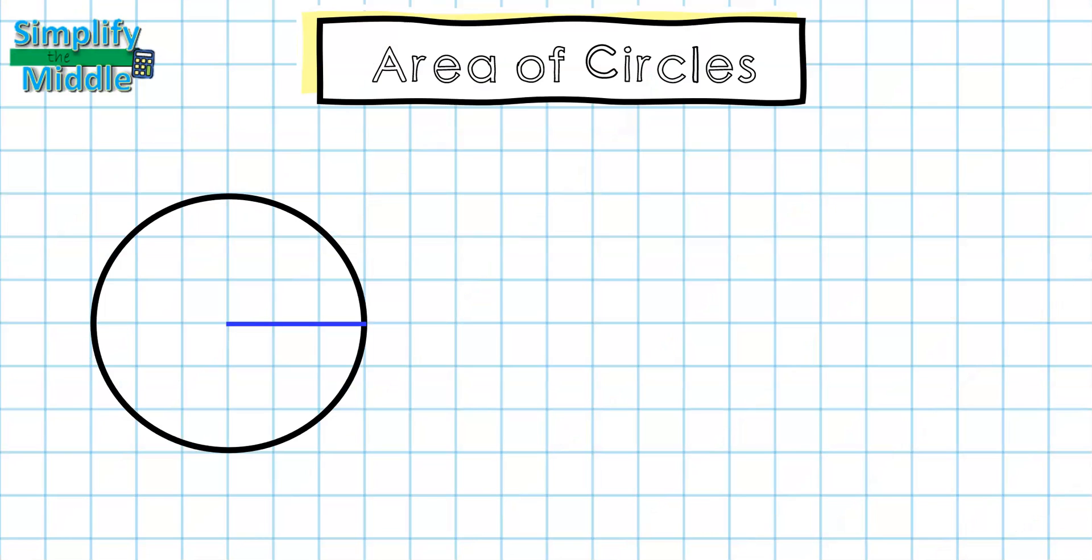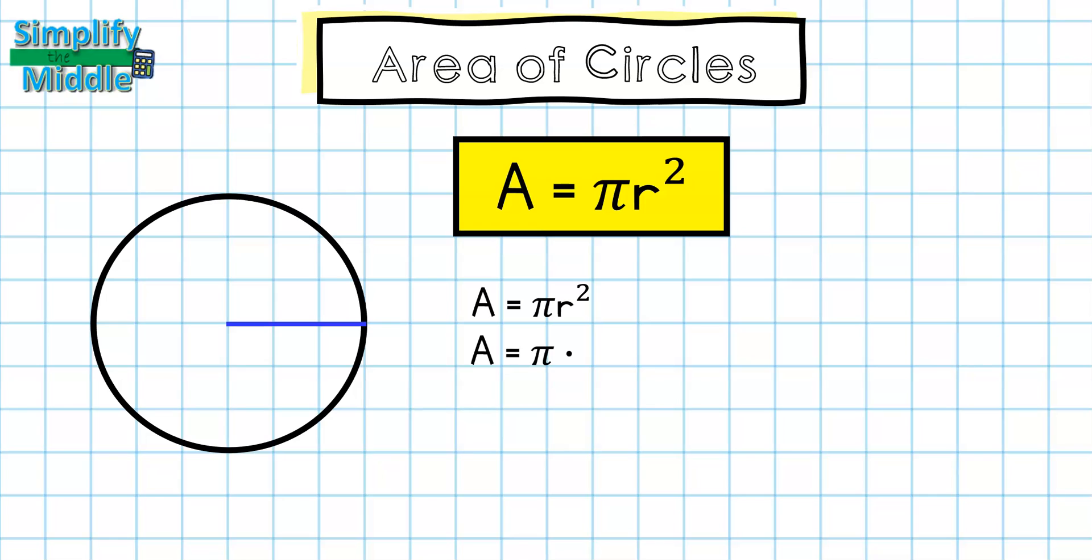Now that we have our formula, let's go ahead and apply it. So the first step of solving any circle area problem is to rewrite the formula. So I'm going to write area equals pi times r squared. Something important to think about here is that this is not radius times 2. So I don't get confused, I'm going to rewrite this as area equals pi times radius times radius. This just helps me remember that I'm multiplying the radius by itself.